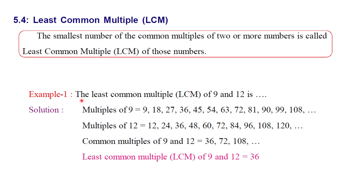Let's find the least common multiple of 9 and 12. First, we list the multiples of 9: 9, 18, 27, 36, and so on. Then we list the multiples of 12: 12, 24, 36, 48, and so on.